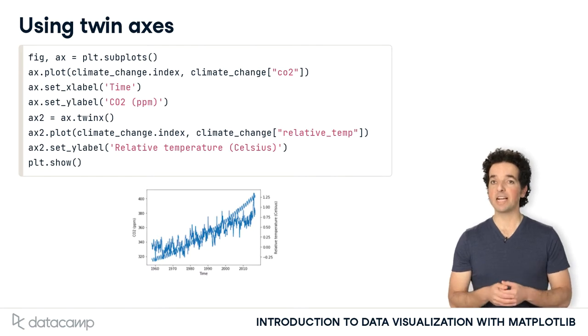There's one y-axis scale on the left for the carbon dioxide variable, and another y-axis scale to the right for the temperature variable. Now, you can see the fluctuations in temperature more clearly.